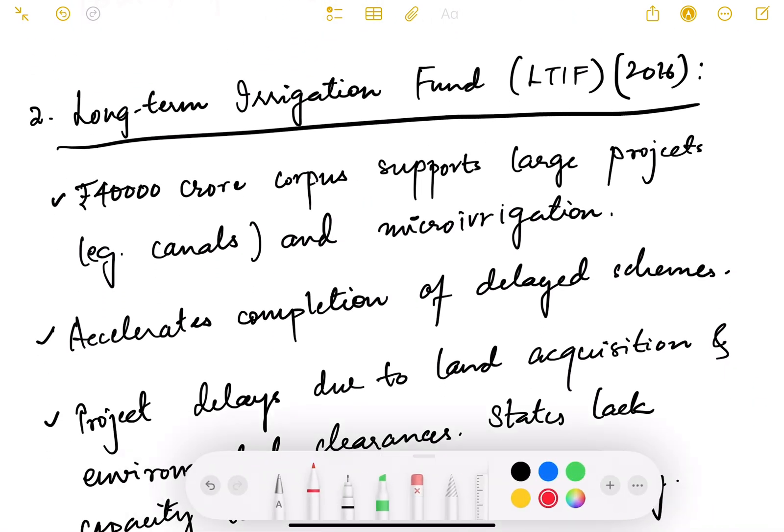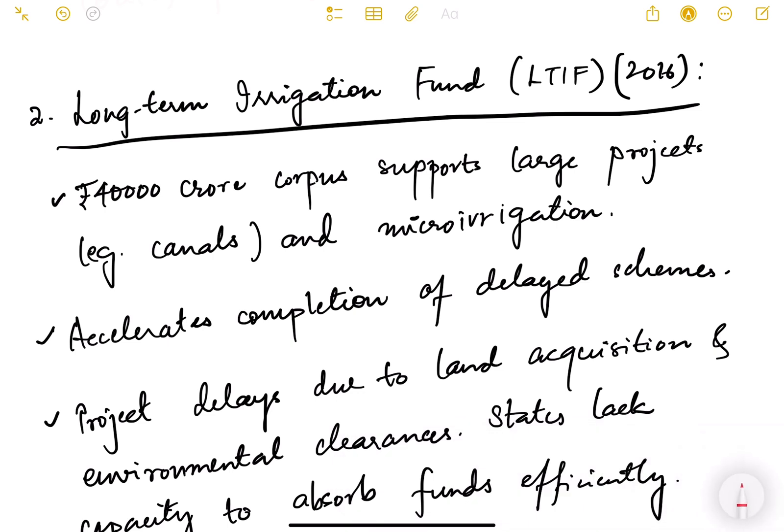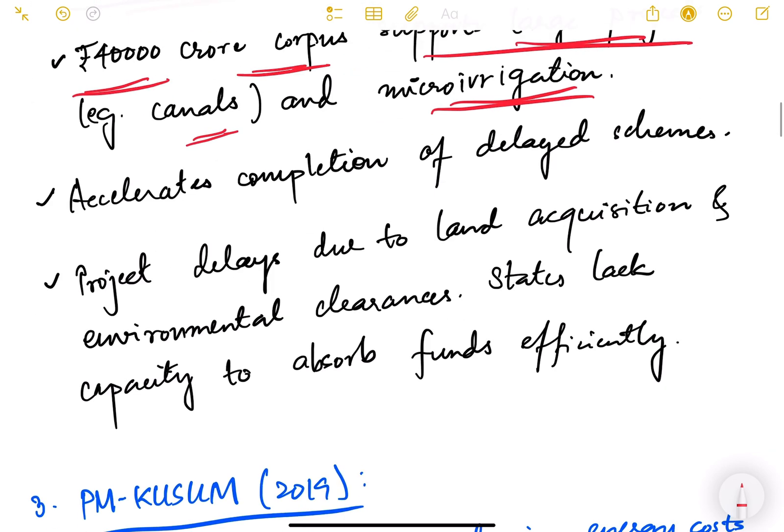Then the next scheme or program of the government that we are going to talk about is the LTIF which is Long-term Irrigation Fund. We had briefly mentioned about this in the previous video also. This was launched in 2016. It is basically a 40,000 crore corpus fund which supports large projects like canals and also micro irrigation. So it accelerates completion of delayed schemes.